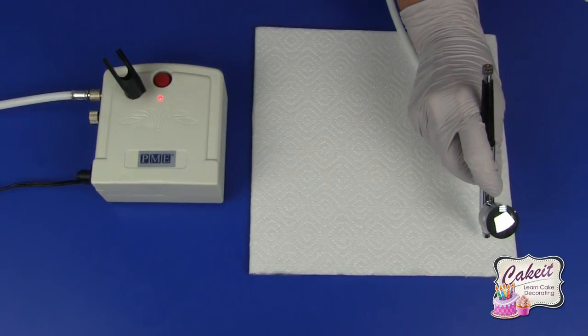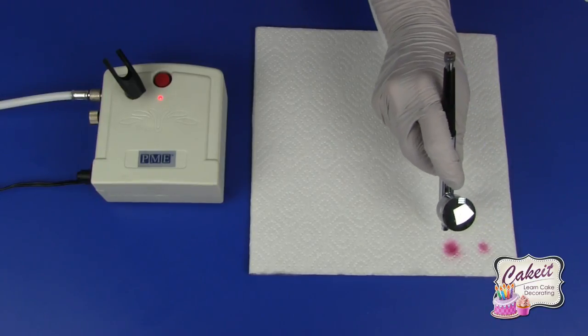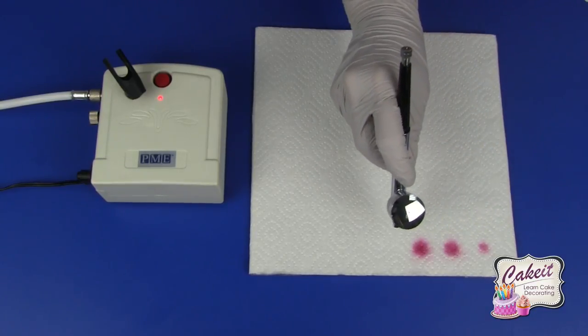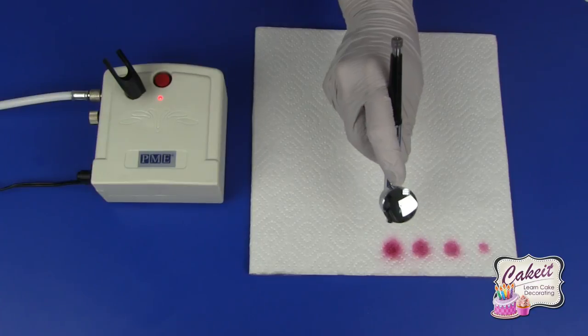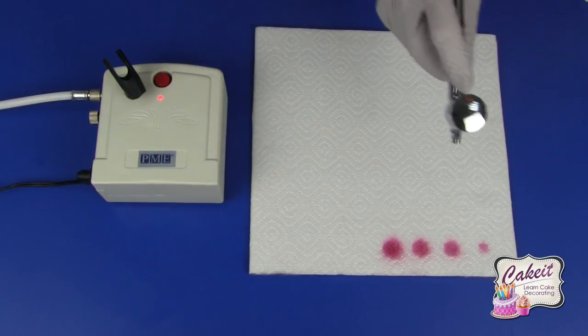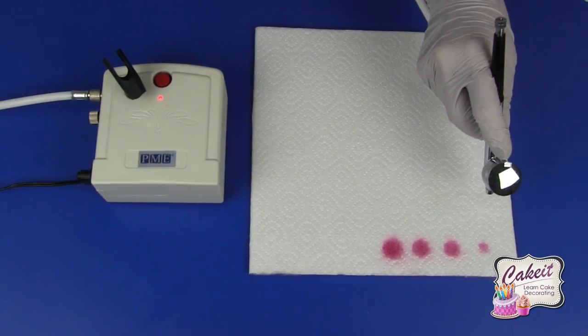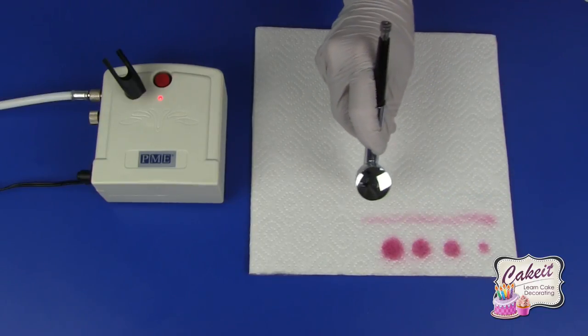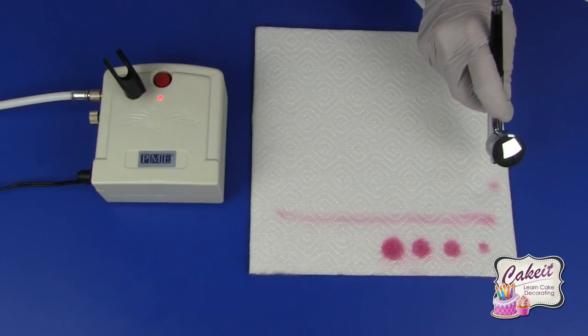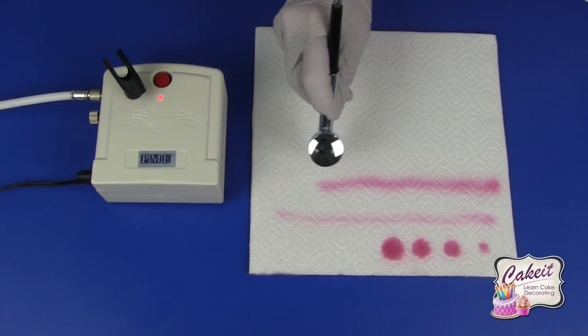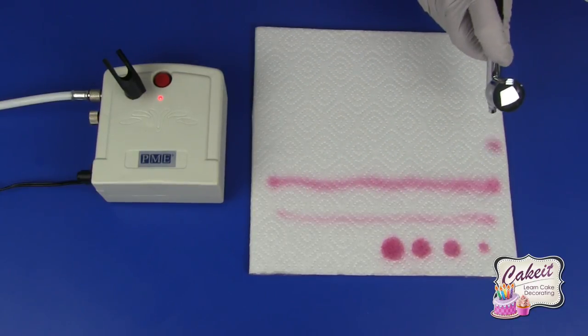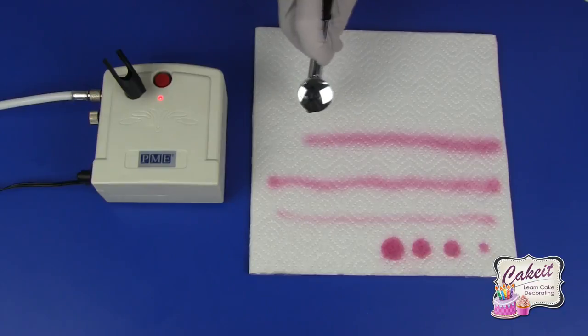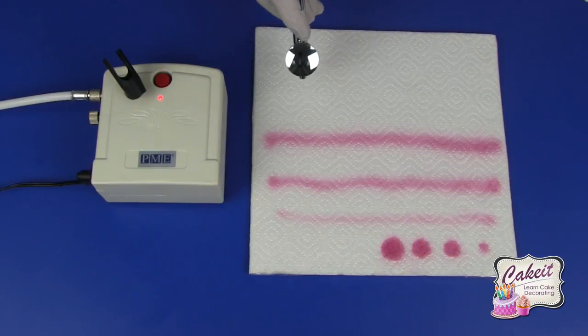And I'm going to pull the lever back. This helps build up my colour. And just by using more pull you can see I've increased the colour that's on my kitchen paper. A little bit more pull gives me a thicker line, and a little bit more pull again and I get a much wider line. I can also go in close.